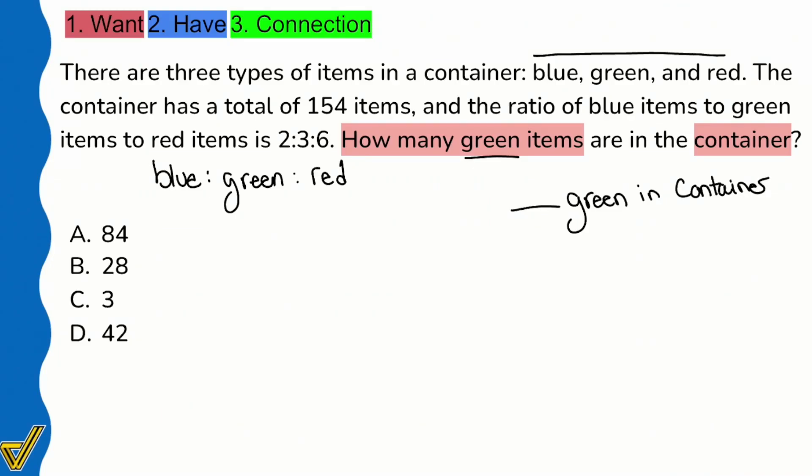Blue, green, red. The container has a total of 154 items. Oh look at that, we see we want to know how many green items in the container, and the container has a total of 154 items. So I'm going to write that down: we are looking for the number of green in the container, but we have 154 total in the container.